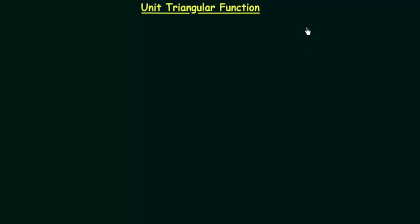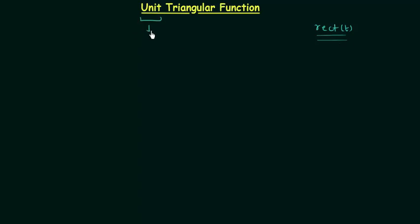In the previous lecture we completed unit rectangular function. In this lecture we will study unit triangular function. The idea will remain the same — like the unit rectangular function, we will have unit area. The area will always remain 1.